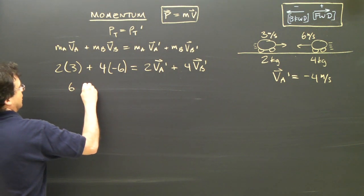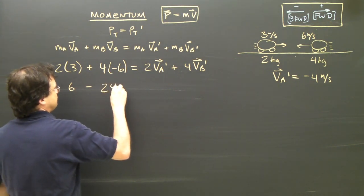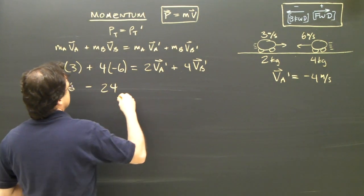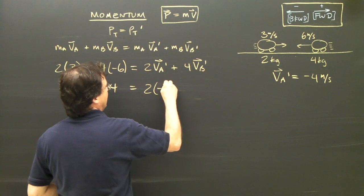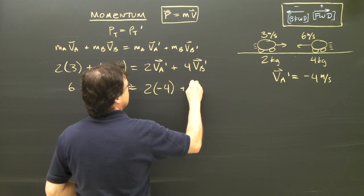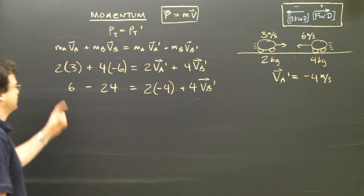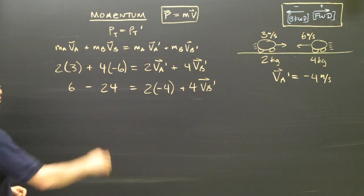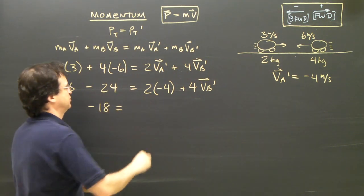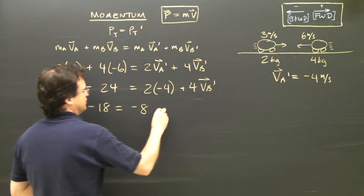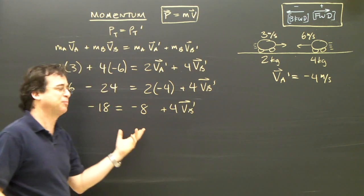So we've got here six minus six times four is twenty-four. This is two, and we know this is negative four, plus 4VB afterwards. So six from twenty-four, it's going to be negative eighteen here. Four times two is negative eight, plus 4VB afterwards. And it's just simple math.